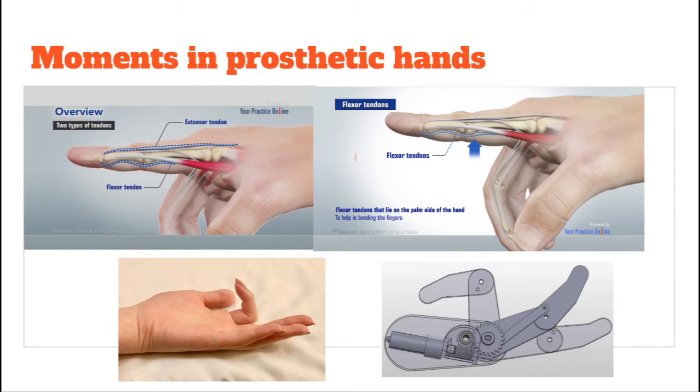In this early prosthetic hand prototype, a DC motor turns a gear that connects to a thin rod that acts as the tendon running from your knuckle past your first finger joint. When this tendon is pulled back from the gears rotation, this exerts a moment on the finger extension and the finger bends.